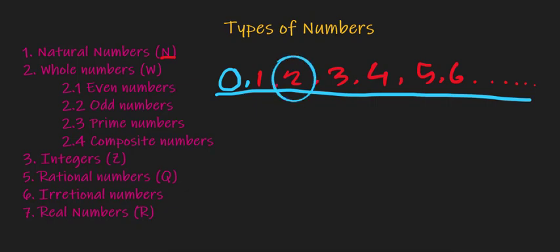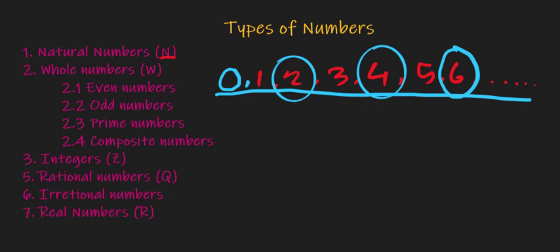For example, 2, 4, 3, 8, 10, 100 — these are actually examples of even numbers.